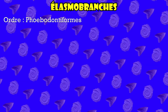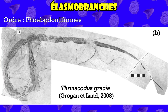Pour en terminer avec les phébodontes, sachez également que le genre Trinacodus n'est pas en reste dans le registre fossile, puisque l'étude d'un squelette complet a été publiée en 2008 par Grogan et Lund, squelette qui possède des caractéristiques assez similaires à celles de Phoebodus.